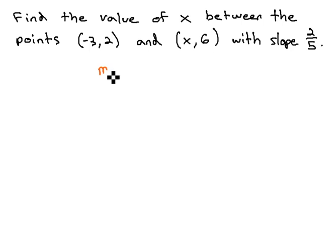We recall the slope formula is y2 minus y1 over x2 minus x1 equals m, or our slope.